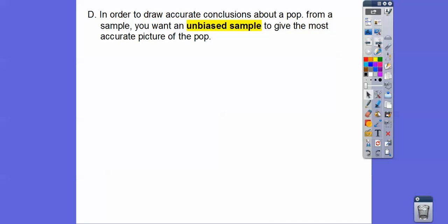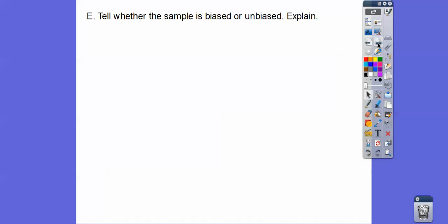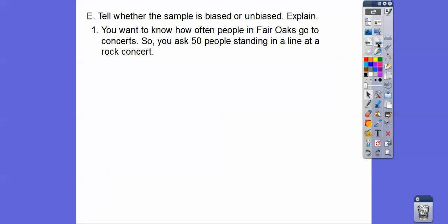In order to draw accurate conclusions about a population from a sample, you want an unbiased sample to give the most accurate picture of your population. A sample that is either over-represents or under-represents your population is considered biased, so it would be a biased sample.